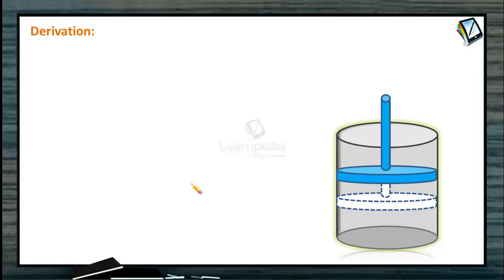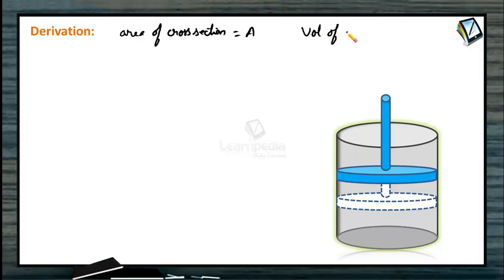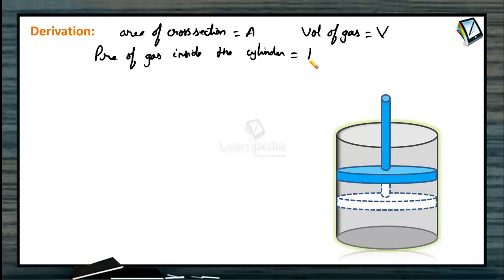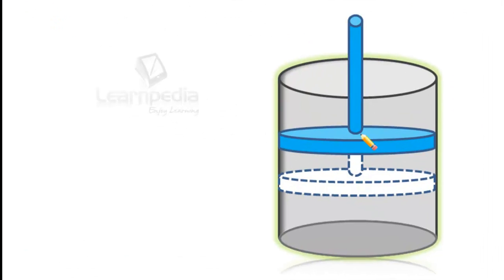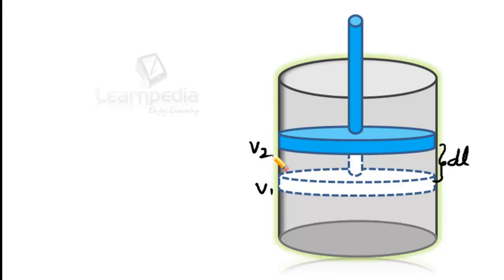Let us derive the expression for the work done in an isothermal irreversible process. Consider a cylinder fitted with a frictionless and weightless piston having area of cross-section A, containing a gas of volume V. Let the pressure of the gas inside the cylinder be P. During the expansion of the gas, the piston moves upward by a distance DL, and the gas expands from volume V1 to V2 against the external pressure P_ext.